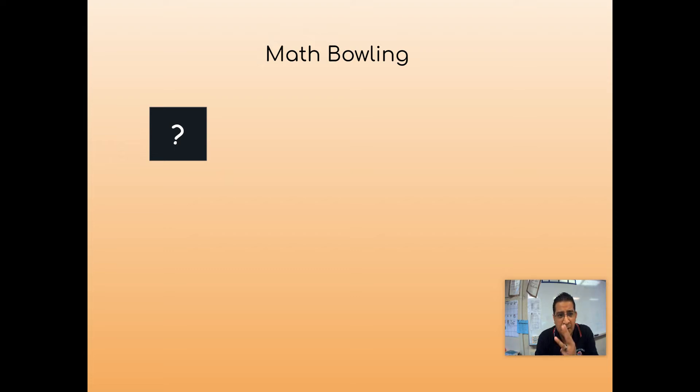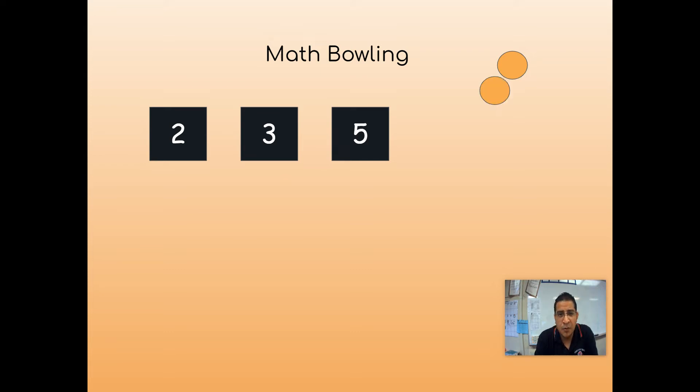So Math Bowling, basically you're going to pick three numbers that you can use to knock out the pins. For example, let's say 2, 3, and 5. You can generate those or you can just randomly pick some numbers. I've seen people actually throw the dice and they can generate the numbers as well. But you need three numbers. Here are the pins like in bowling. We need 10.